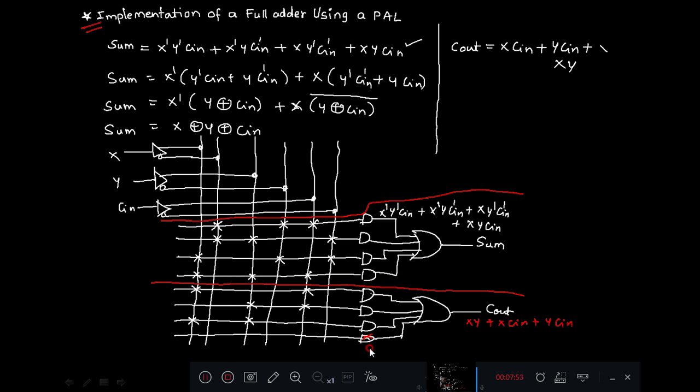So here what we can observe is in PAL, summary: OR array is fixed, AND array is programmable. Second point, in the representation each function can have four sum of product terms. So up to four sum of product terms function can be implemented using one block.